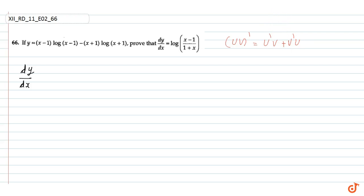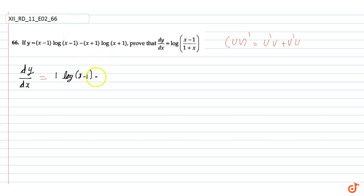Now, dy by dx is equal to — सबसे पहले हम x minus 1 का differentiation करेंगे, तो वह equal to 1 होगा, और log(x minus 1) ऐसे ही रहेगा। Then, हम x minus 1 को ऐसे ही रहने देंगे और log(x minus 1) का differentiation करेंगे, तो 1 upon (x minus 1) आएगा। And x minus 1 को differentiate करने पर 1 आएगा। तो यह मिलकर minus आ गया।